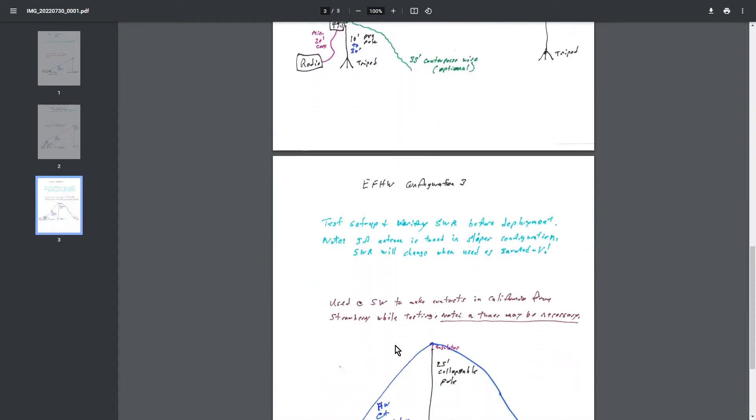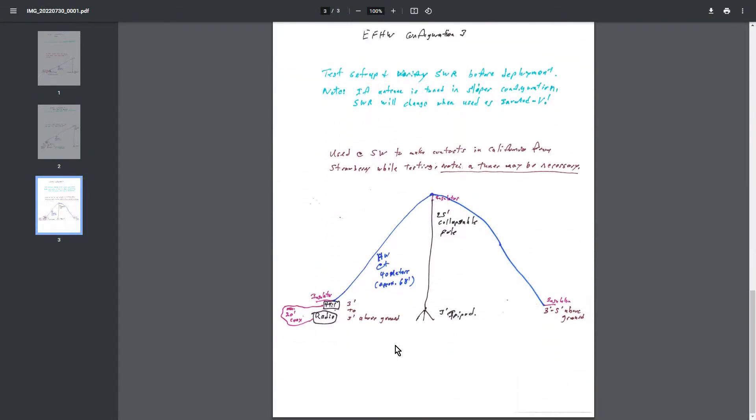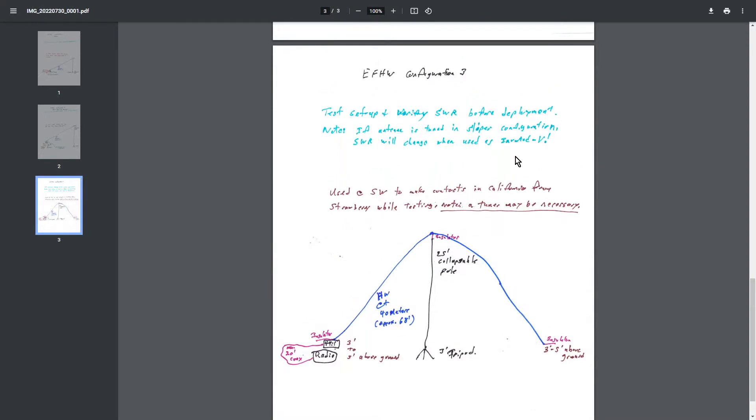And then the third configuration is the inverted V. Again, test your setup and verify SWR before deployment. You blow up your radio, it's not my fault. If your antenna is tuned as a sloper, your SWR is going to change in this configuration. You might want a tuner. You don't necessarily need one. I use this configuration. I tested this at just five watts.